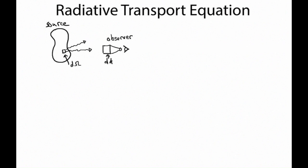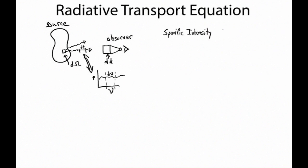Radiation arrives with some energy over some time dt. The other key fact about specific intensity is that if we look at the Fourier transform of the radiation we receive and plot the power versus frequency, we're also talking about some interval in frequency. So specific intensity, which we'll call I-sub-nu, has units of energy per every unit you can imagine: time, frequency, angular area on the sky, and the collecting area of our telescope.